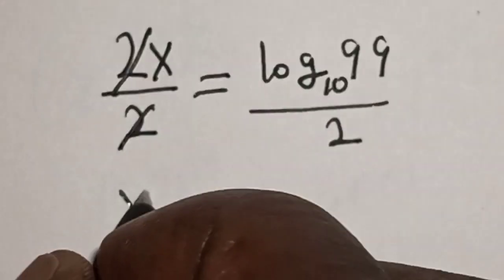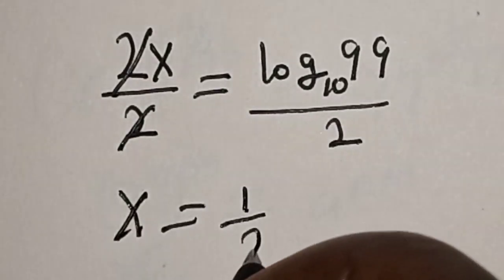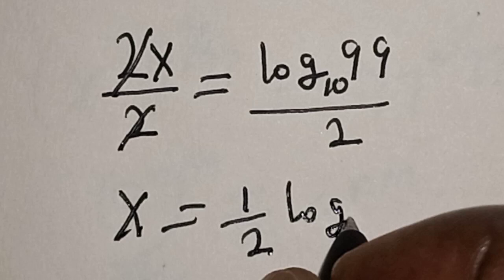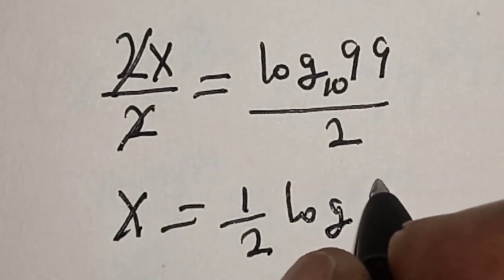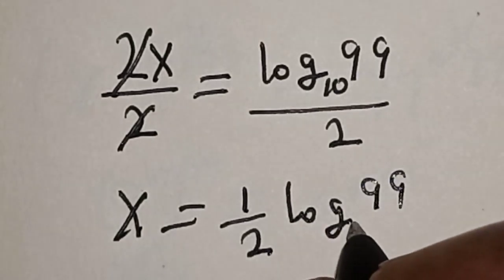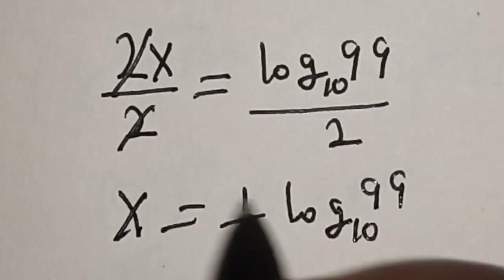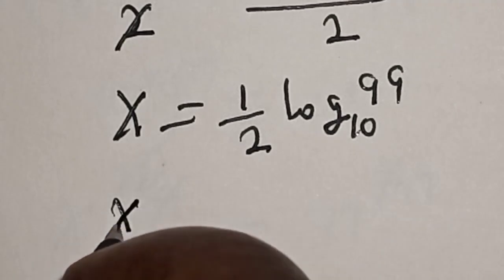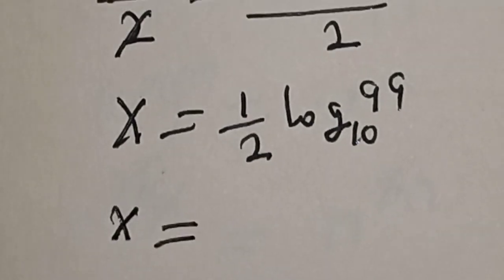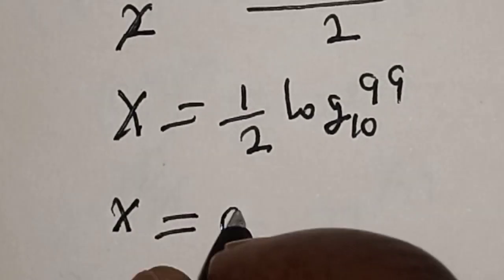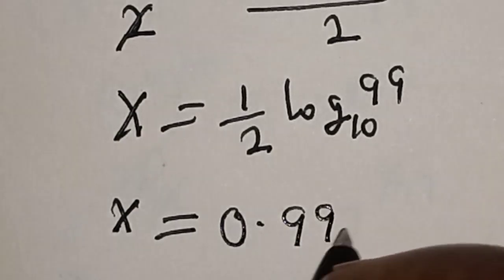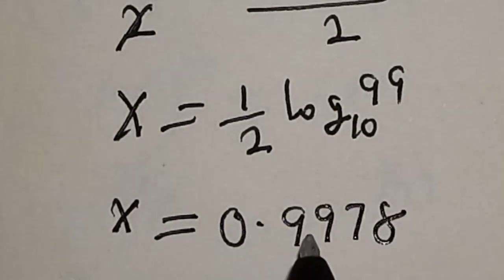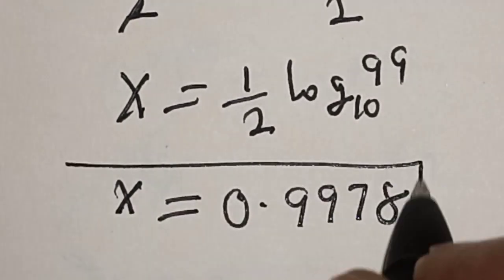we have x is equal to 1 over 2 log 99 base 10. Then, if you press your calculator, x is equal to 0.9978. That is our final answer.